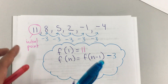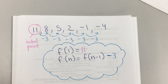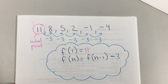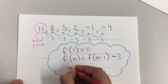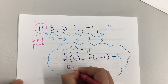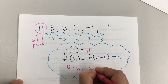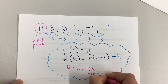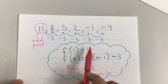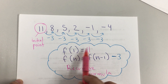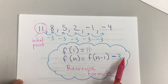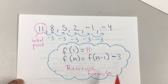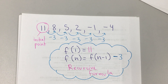This was short and easy. This will get you ready for 7.1. So have fun. This is the recursive formula: f of 1 equals the initial point, f of n equals f of n minus 1 with the pattern — in this case, minus 3.